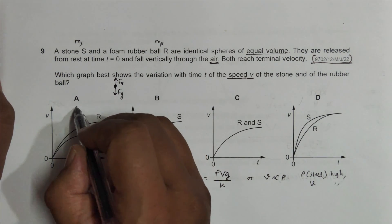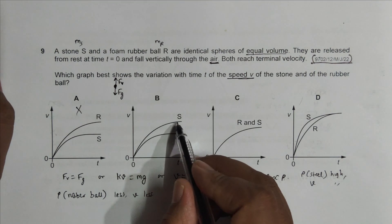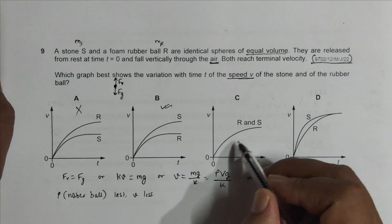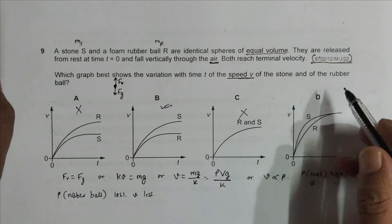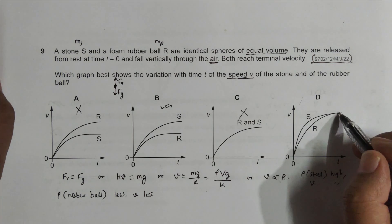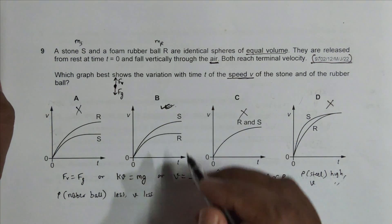As I go through the choices: this is incorrect because it says the velocity of rubber ball is high. It says the velocity of steel ball is high, so it should be correct. It says both have the same velocity, so wrong. And it says different variations but the same terminal speed later on, so it's also wrong. The only correct choice is choice B.